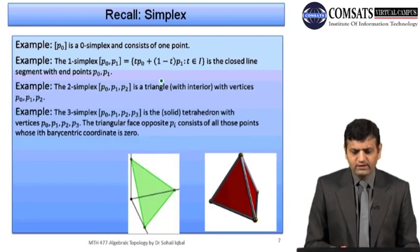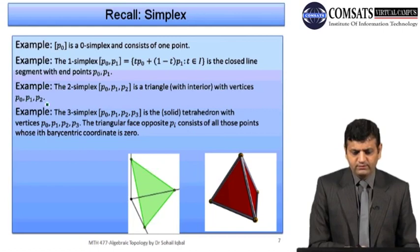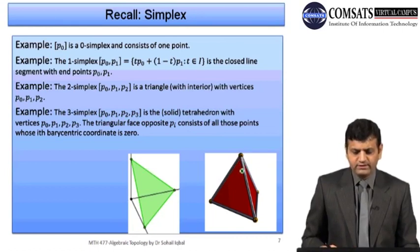A two simplex is a solid triangle with vertices p_0, p_1, p_2 — as we saw in the example with coordinate points of ℝ^3. A three simplex, generated by p_0, p_1, p_2, p_3, is the solid tetrahedron, meaning it includes all points inside the tetrahedron.